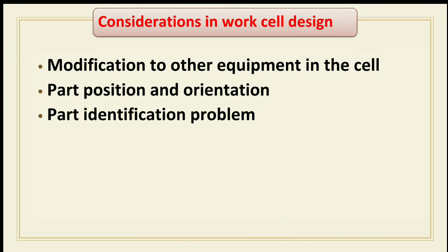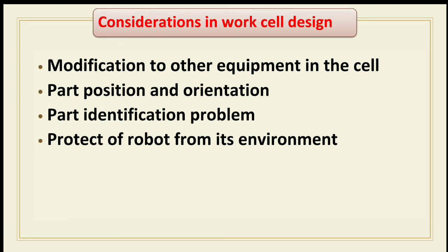The third consideration is part identification. In a cell where more than one type of part is processed or assembled, a method of identifying the particular part type must be determined. This can be done by any of a number of automated means involving optical techniques or limit switches to sense differences in size or geometry.